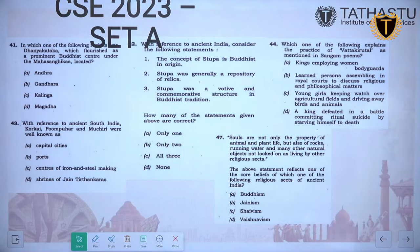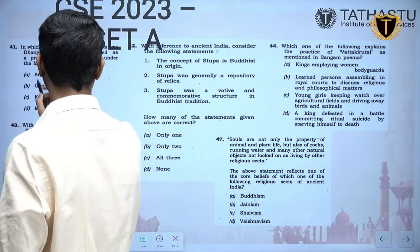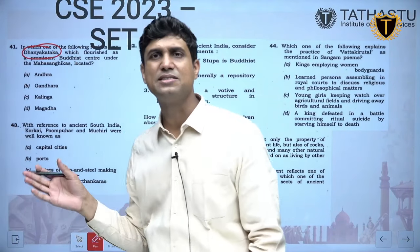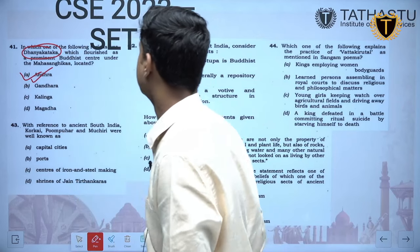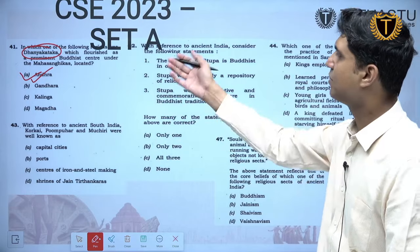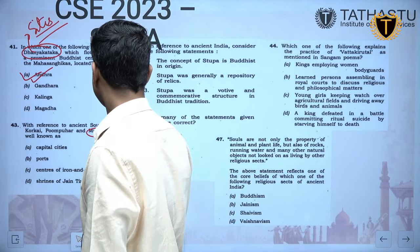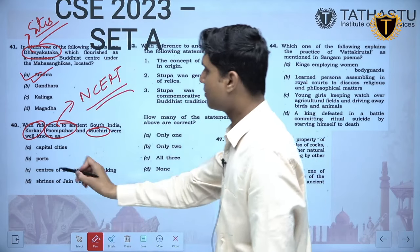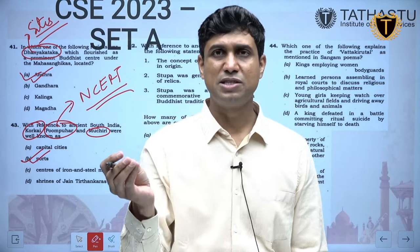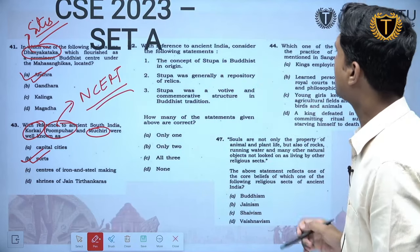In 2023, 8 questions were asked from ancient India. First: Dhannyakataka — again a site question, directly covered in the new thematic NCERT on a map. Dhannyakataka is located in Andhra Pradesh and was a prominent Buddhist centre under the Mahasanghikas. Also, ports Muchiri, Poompuhar and Korkai — Poompuhar is directly given in NCERT. These were ports, similar to Ghantasala and Kadura asked 2–3 years earlier. Port is another area to cover.